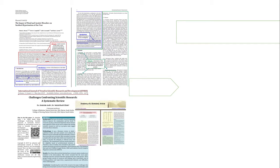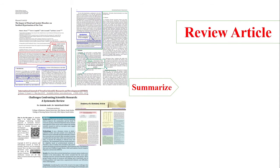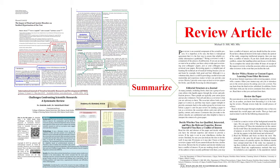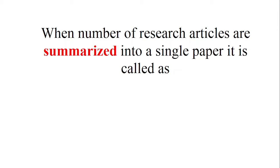Now, whenever we summarize these research papers — summarizing what has already been done in the published research work into a single paper — that will be called a review article. A large number of papers have already been conducted and published in a particular discipline, and when a researcher summarizes the previously published work into a single paper, that is known as a review article.